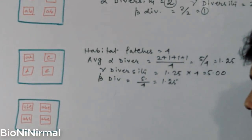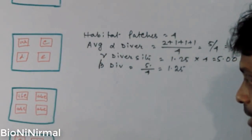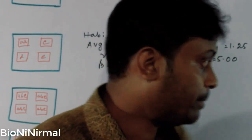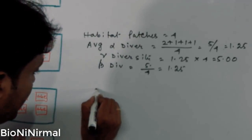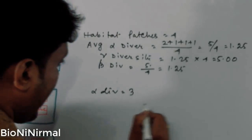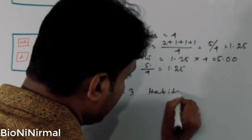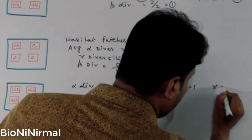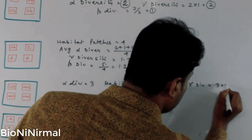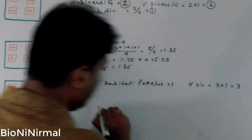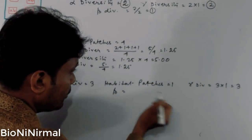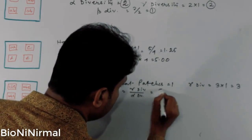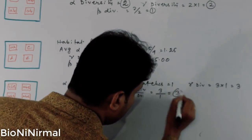Problem 3: These are homogeneous habitats because all habitats contain the same kinds of species — A, B, and C. So alpha diversity = 3. Since it is homogeneous, habitat patches = 1. Gamma diversity = 3. Beta diversity = gamma ÷ alpha = 3 ÷ 1 = 3... actually beta diversity equals 3 here.